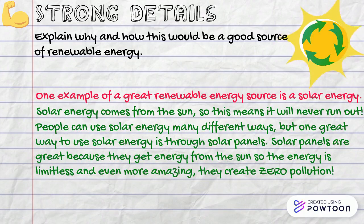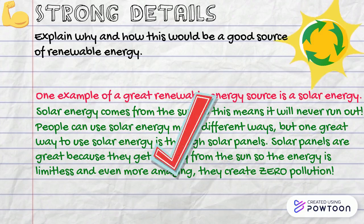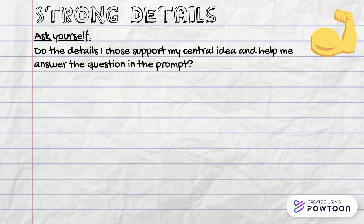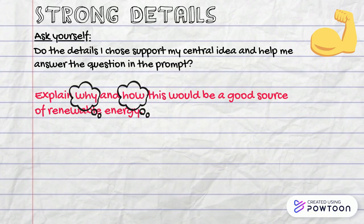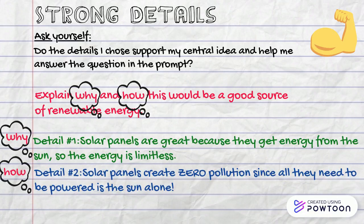Notice those strong details and how I include answering the prompt. Now let's walk through how to write our own strong details. The prompt says: explain why and how this would be a good source of renewable energy. Scholars, the key is to answer those two parts — why and how. Look here at how I answer those specifically in two different sentences.